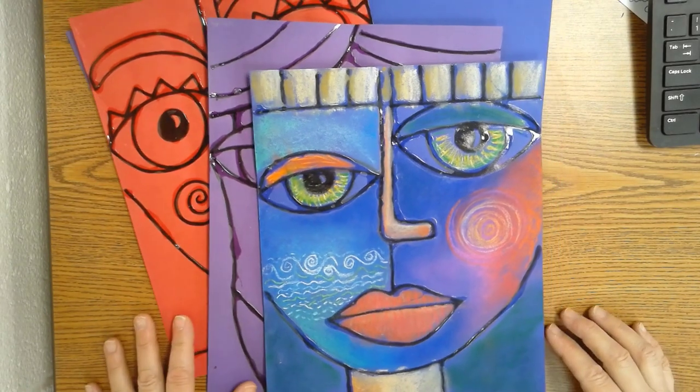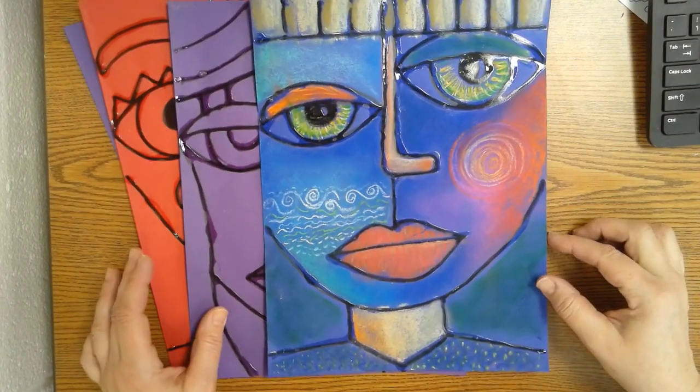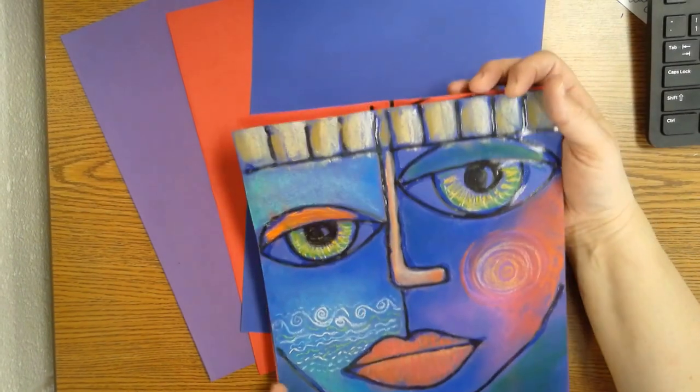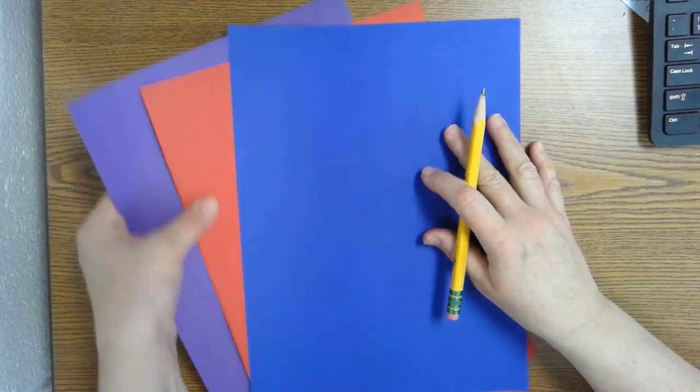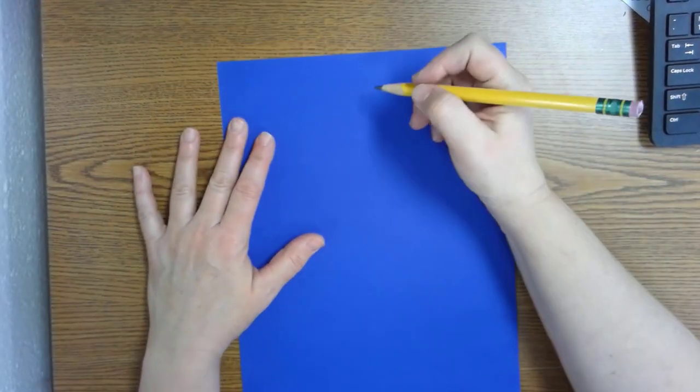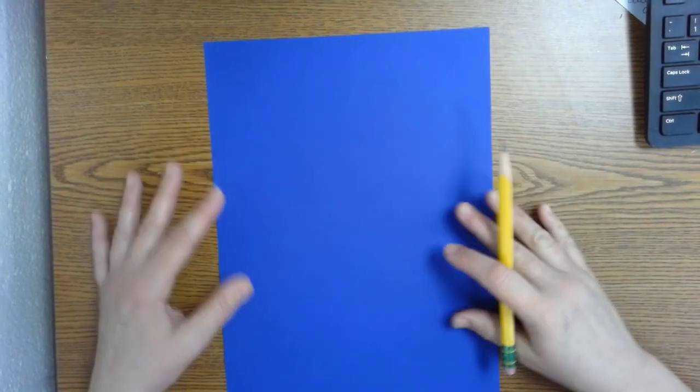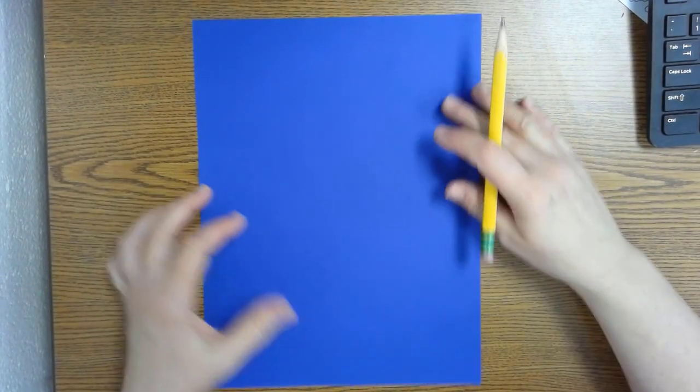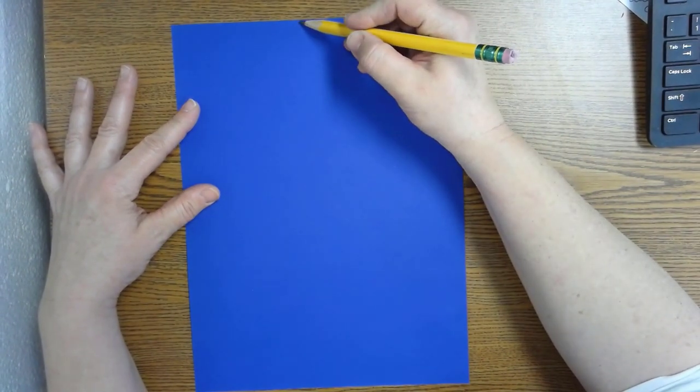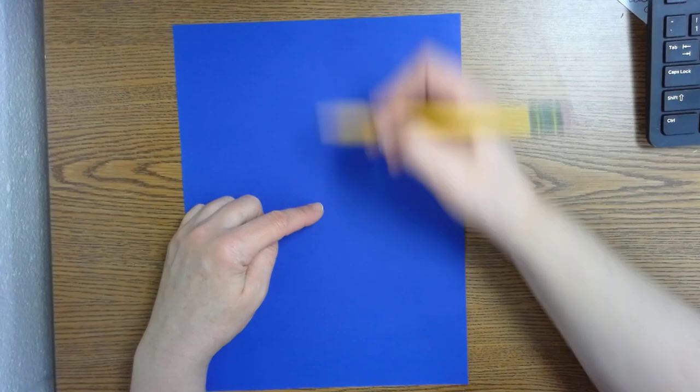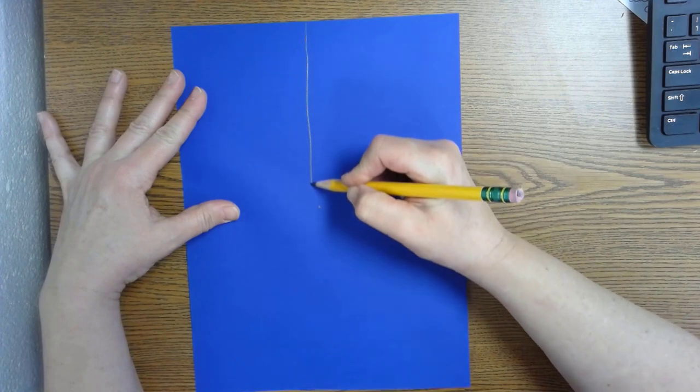So today we're going to be creating our art inspired by Sandra Silberwig. And her art is abstract. It is not realistic. So we're going to do some drawing first with our pencils. You'll need your colored paper and a pencil. The first step is to draw a straight line. Make sure your paper is tall and not wide. You're going to start at the top of your paper and make a line that comes down to about the middle.